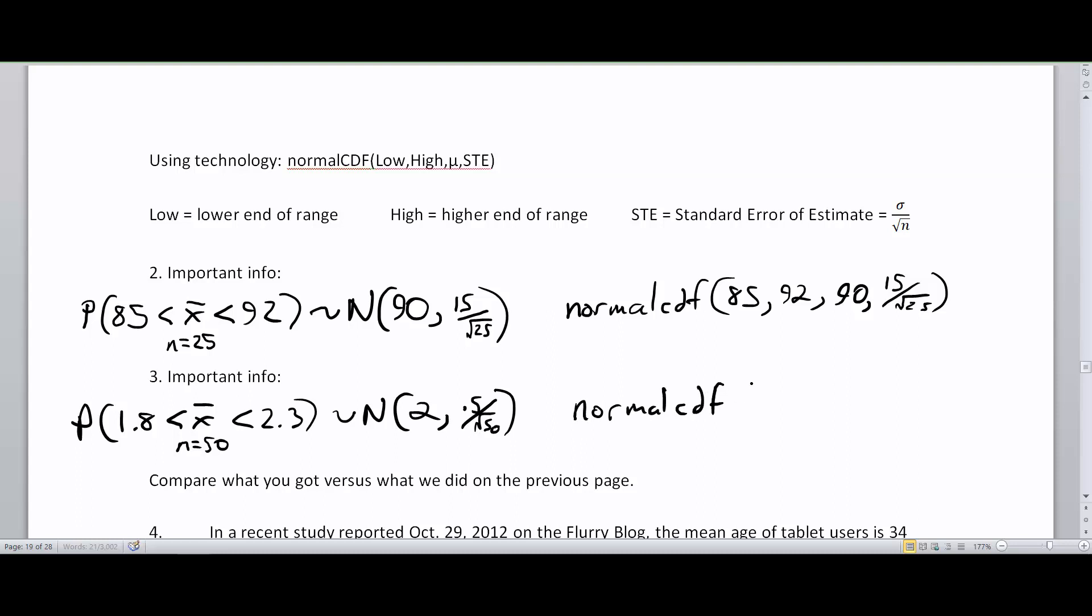So let's follow the formula again. The normal CDF of our lower number 1.8, our upper number 2.3. Our average in this case is 2, and then 0.5 divided by the square root of 50. Type all this in and we'll get all that work done for us by the calculator. That's pretty great.